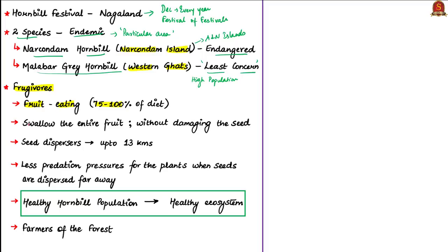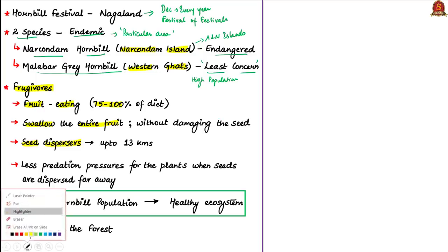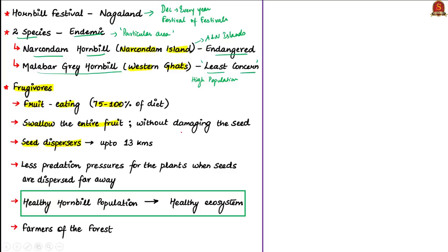Hornbills are frugivores, meaning fruit-eating — almost 75 to 100% of their diet is fruits. Hornbills swallow the entire fruit without damaging the seeds, unlike other birds. They act as seed dispersers, carrying fruits containing seeds to far-away distances and depositing them there. This study found that hornbills disperse seeds as far as 13 kilometers. This benefits plants in the ecosystem as there is less predation pressure, allowing plants to grow in new environments in a healthy manner, resulting in a healthy overall ecosystem. A healthy hornbill population indicates a healthy ecosystem — hence hornbills are rightly called the farmers of the forests.